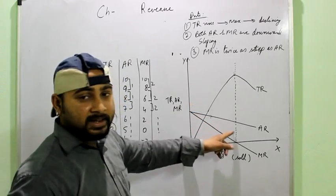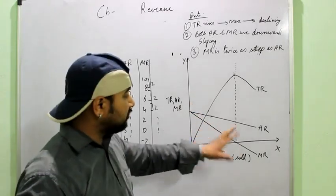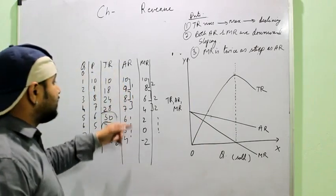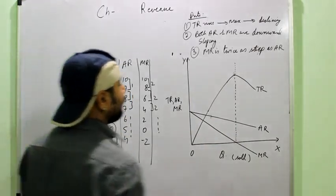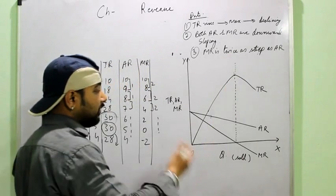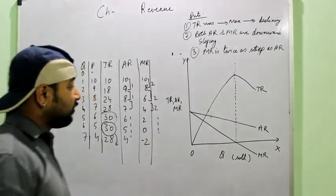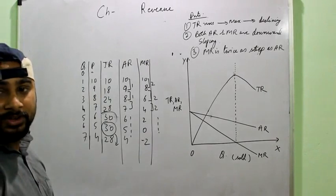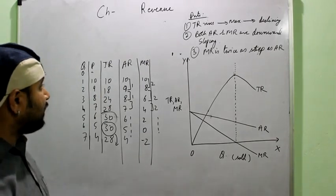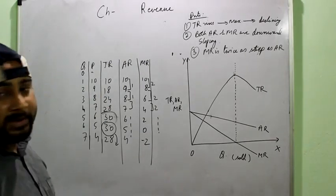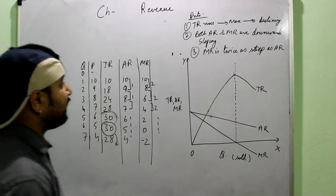So, while in AR the steepness is less. Or you can say the slope of AR is less. Because it is declining at a slower rate. So this question maybe I will put in front of you during the exam that why this happens. Individually also it can be asked. So you should remember that it happens because MR decreases at twice the rate of AR.